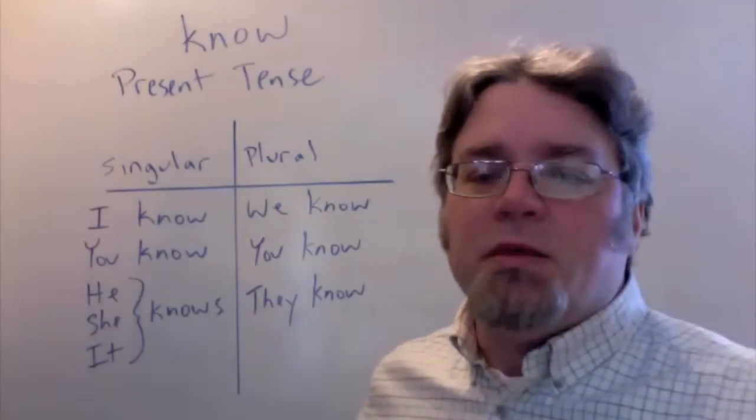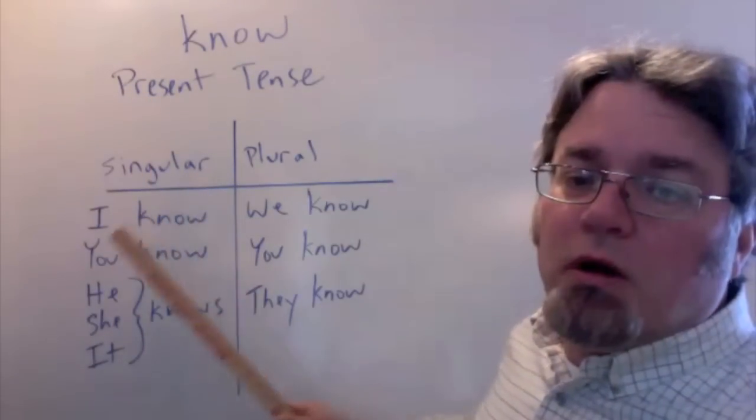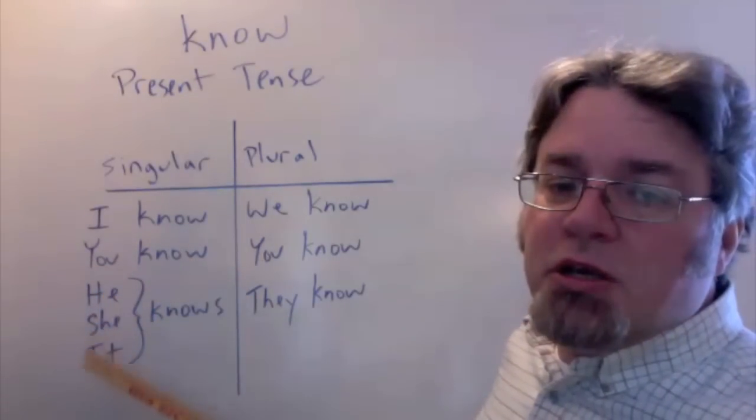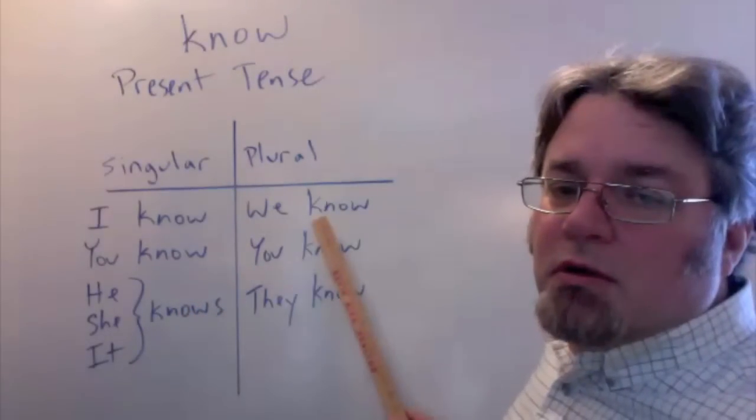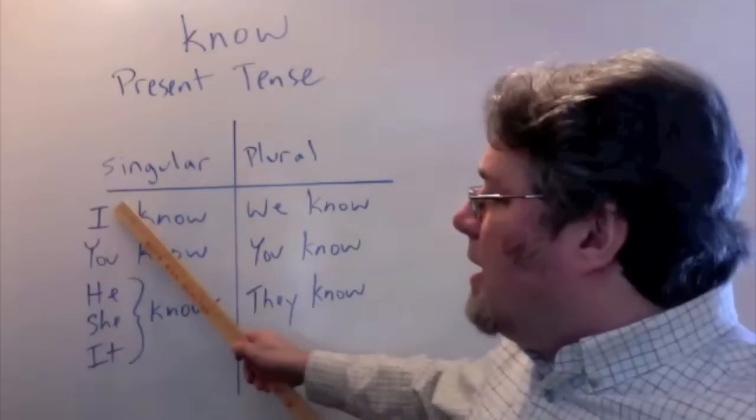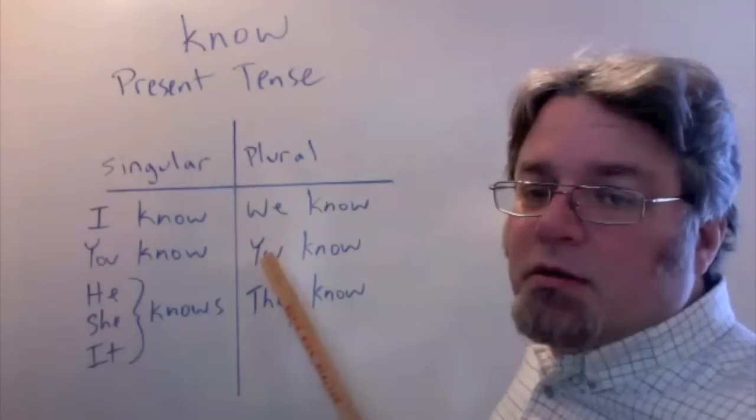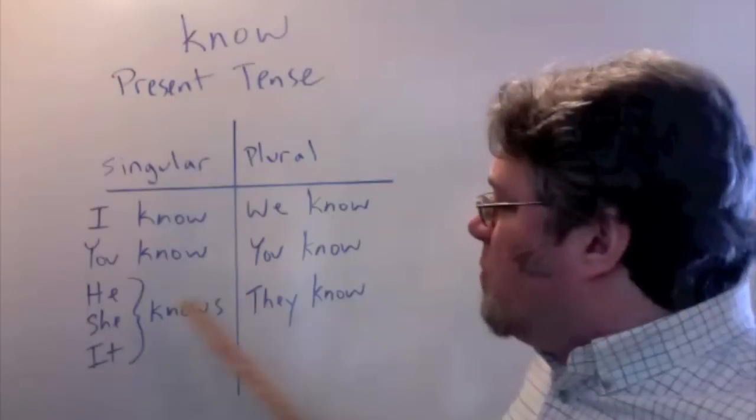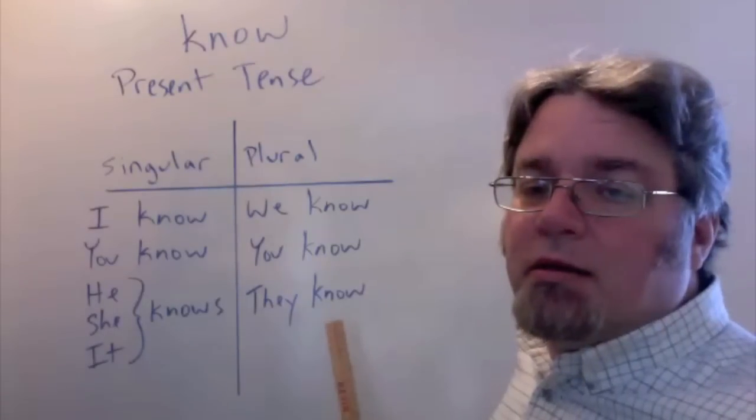Here's the verb know in the present tense. Singular: I know, you know, he, she, it knows. We know - this is plural. Remember that I and you together form we. You know - this is the plural form for you. And the plural for he, she, or it is they. They know.